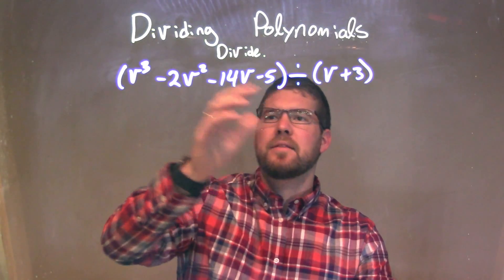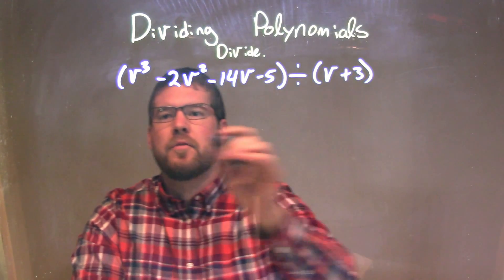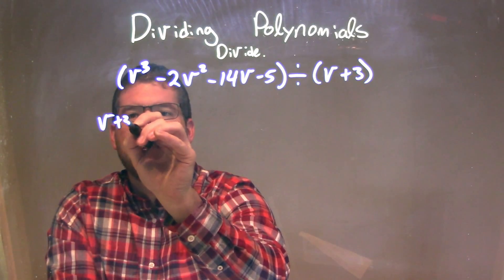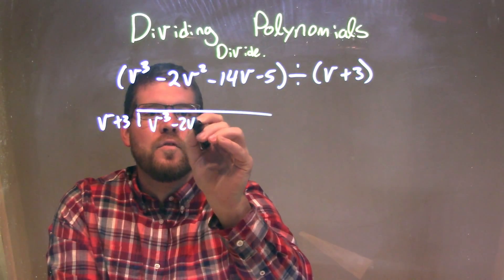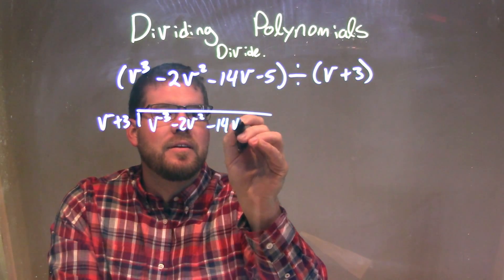Okay, well, I need to make this on cover. This is a long division. My divisor, v + 3, goes into my dividend, v³ - 2v² - 14v - 5.